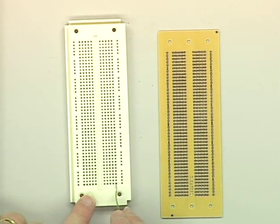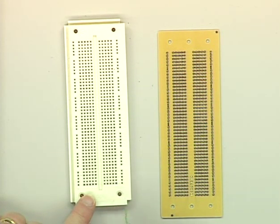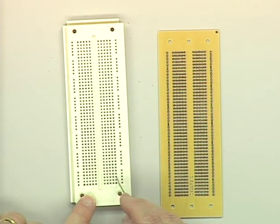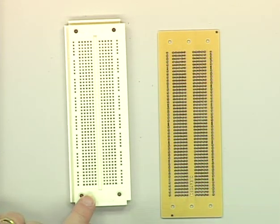The same is true over here on the breadboard. These five holes are connected. The next five are connected. The next five are connected, but no row is connected to the row next to it.